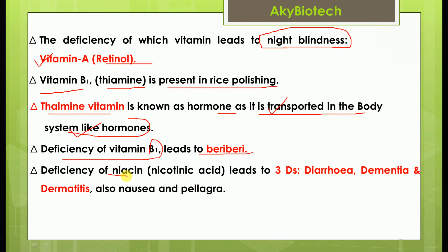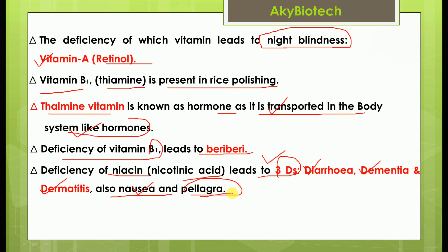Deficiency of niacin (nicotinic acid) leads to the 3Ds: diarrhea, dementia, and dermatitis. It also causes nausea and pellagra along with these 3Ds.